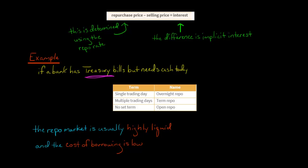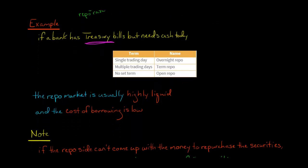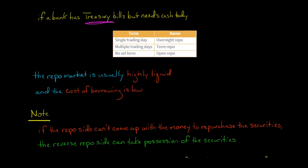The cost of borrowing is usually low, so the difference between the repurchase price and the selling price is usually not too large. It's a popular way for banks and other entities to access short-term funding. If the repo side — the one initially selling the securities and agreeing to buy them back — when it comes time to repurchase the securities, can't come up with the money...